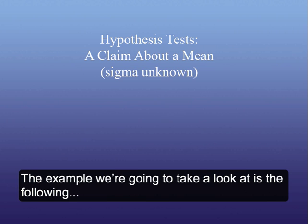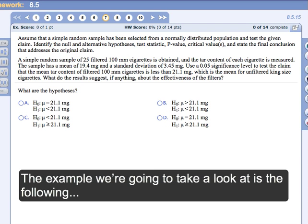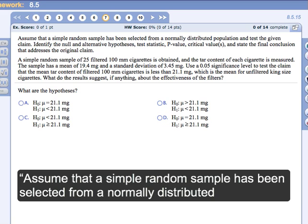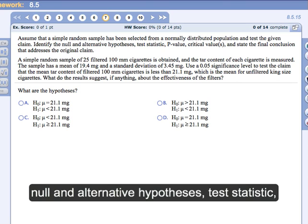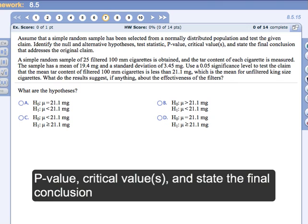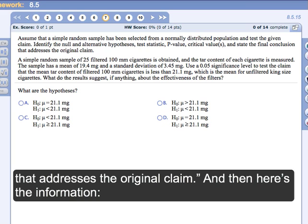The example we're going to take a look at says assume that a simple random sample has been selected from a normally distributed population and test the given claim. Identify the null and alternative hypotheses, test statistic, p-value, critical value, and state the final conclusion that addresses the original claim.